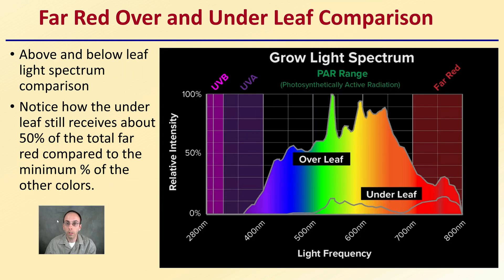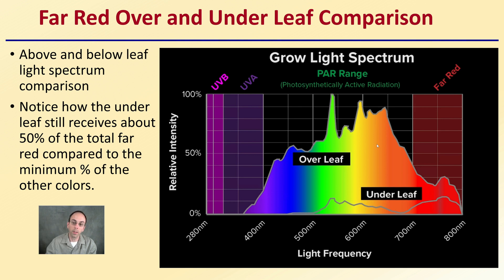Looking at Far Red's under-leaf comparison — above and below leaf spectrums — notice how the under-leaf still receives about 50% of the total Far Red compared to the minimum percentage of other colors. Comparing to the greens, yellows, oranges, and some reds, there's a large gap indicating those wavelengths receive a very small percentage under the leaf. But where Far Red is concerned, we almost see the distance is almost halfway — about 50% of the total Far Red is absorbed under the leaf compared to over the leaf.